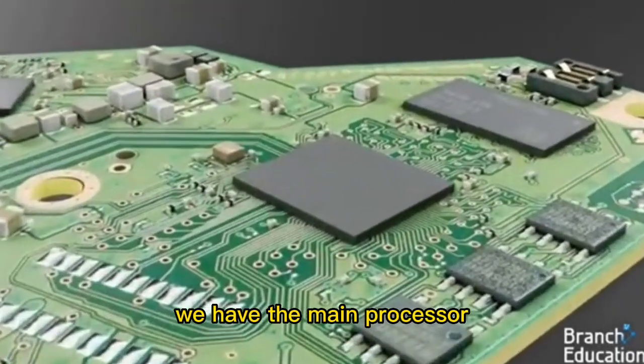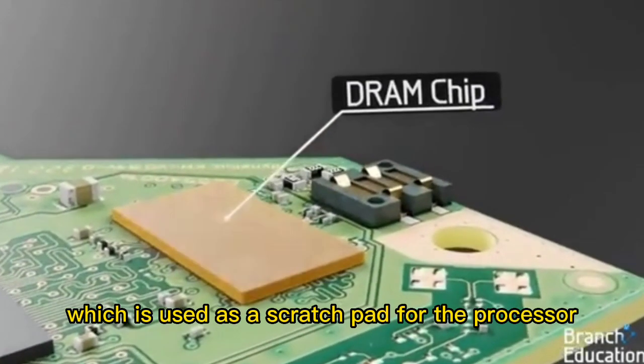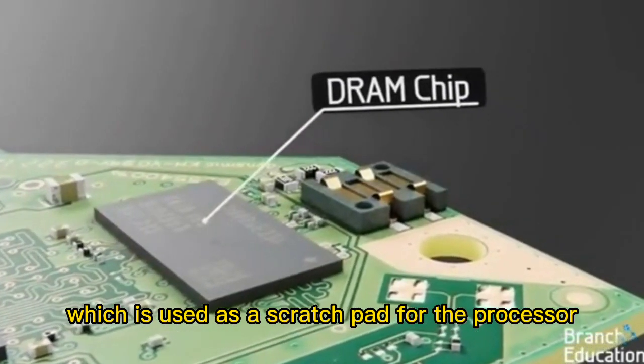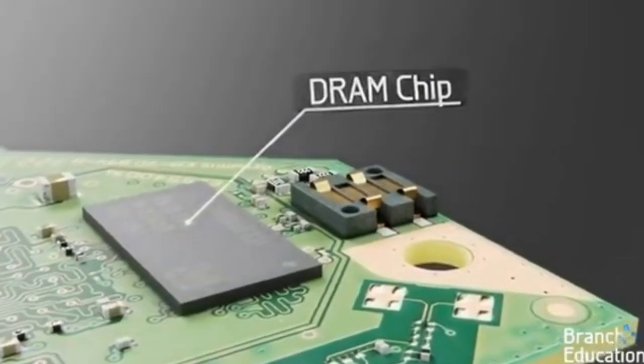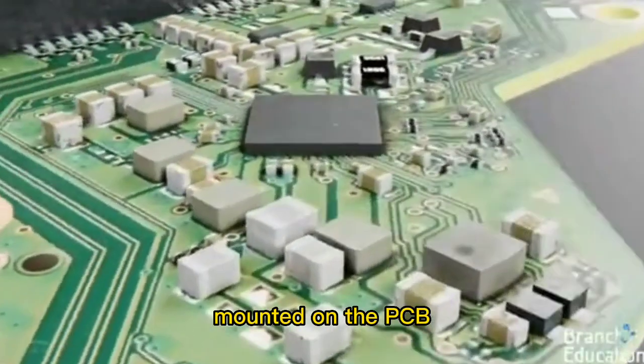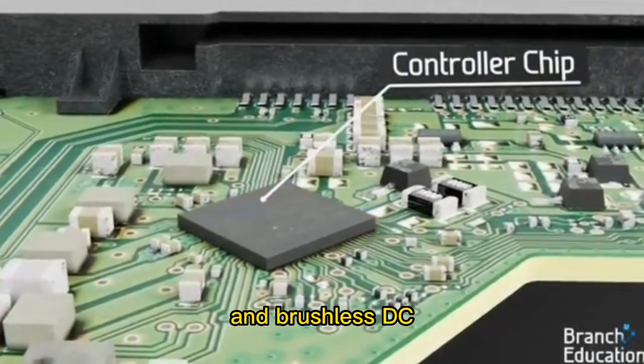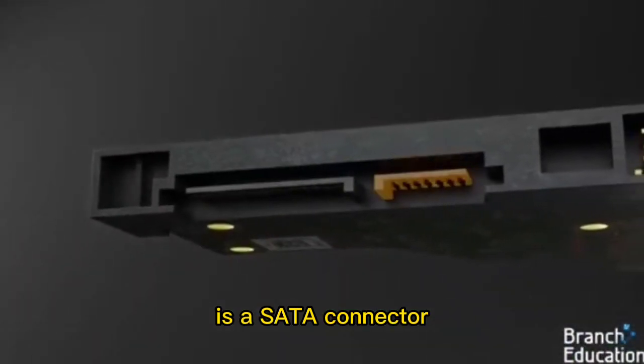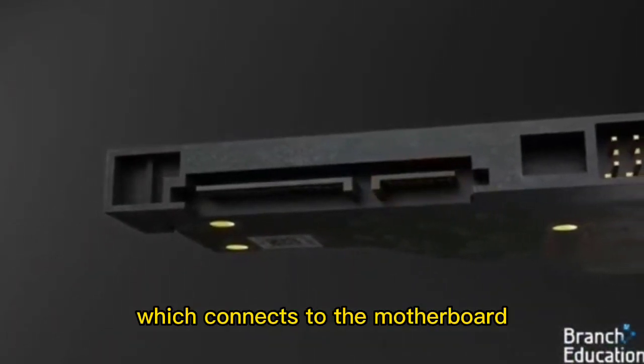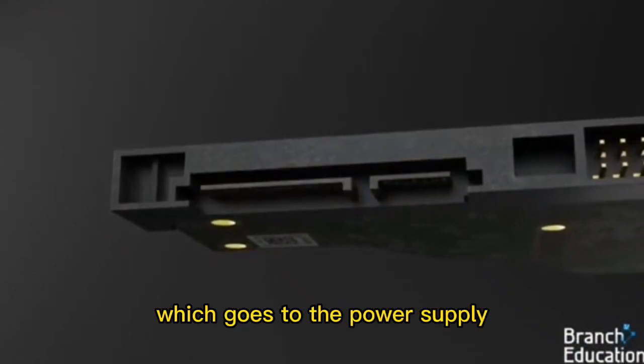On the PCB, we have the main processor, as well as a DRAM chip, which is used as a scratch pad for the processor and a buffer for the incoming and outgoing data. Additionally, mounted on the PCB is a chip for controlling the voice coil and brushless DC spindle motor. And then on the edge of the PCB is a SATA connector, which connects to the motherboard for communications and a separate connector which goes to the power supply.